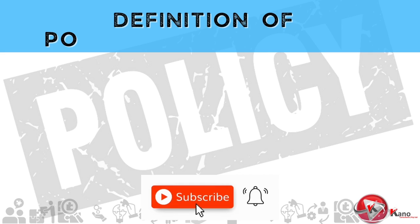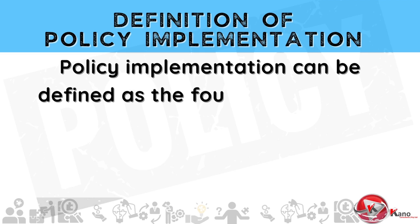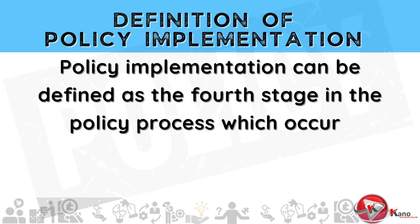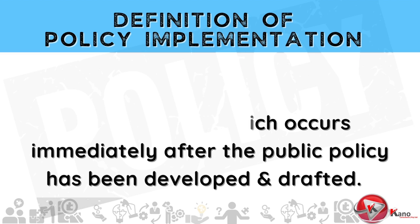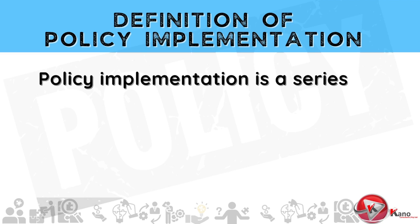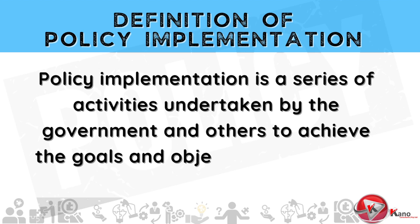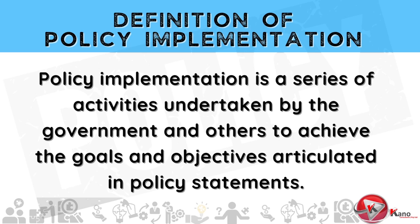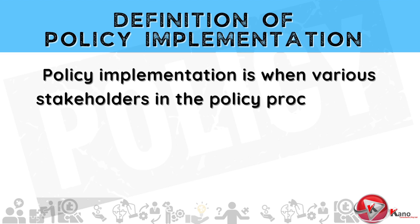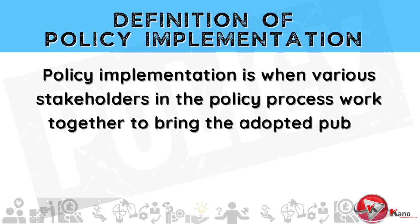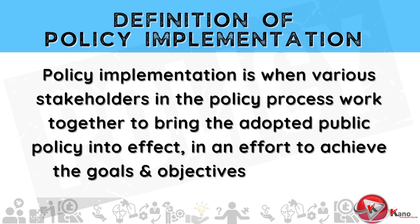So, what is policy implementation? Policy implementation can be defined as the fourth stage in the policy process, which occurs immediately after the public policy has been developed and drafted. Generally speaking, policy implementation is a series of activities undertaken by the government and others to achieve the goals and objectives articulated in the policy statements of the government. Essentially, policy implementation is when various stakeholders in the policy process work together to bring the adopted public policy into effect, in an effort to achieve the goals and objectives of the public policy.